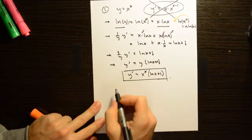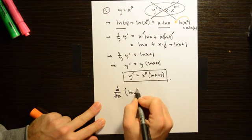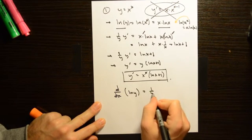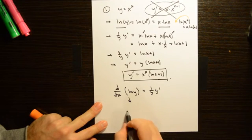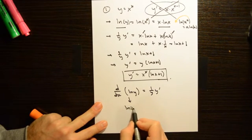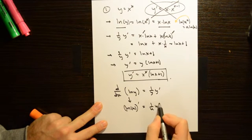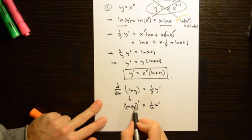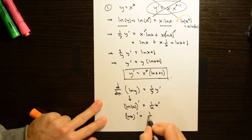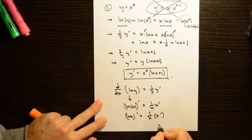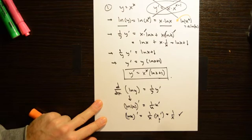As a side remark, when we take d/dx of the natural log of y, the derivative is 1 over y times y prime. This comes from the chain rule: the derivative of ln(u) is 1 over u times u prime. In the special case that u equals x, this becomes 1 over x, since x prime equals 1.